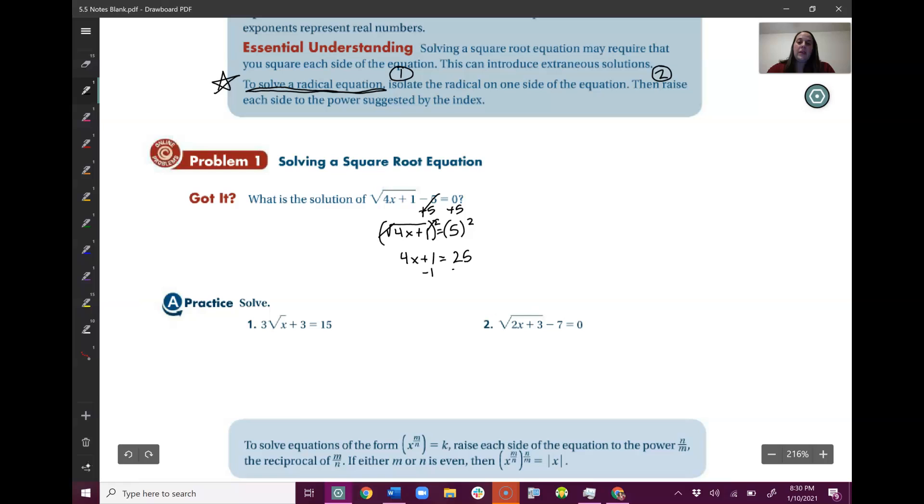Now we're going to minus 1 to both sides. From here we're just solving for x like normal. So I get 4x equals 24. Divide by 4 to get x all by itself. So I get x equals 6. Now we're actually not quite done yet. And here's why.